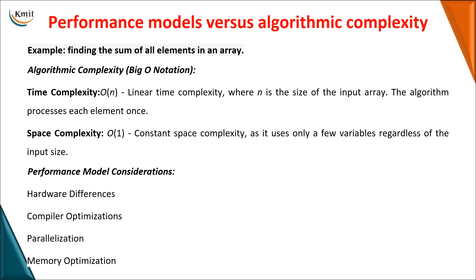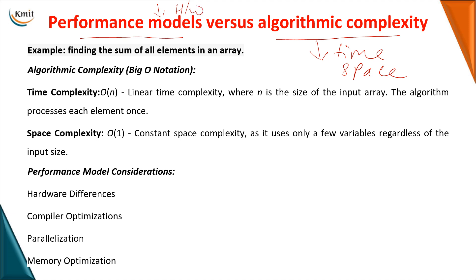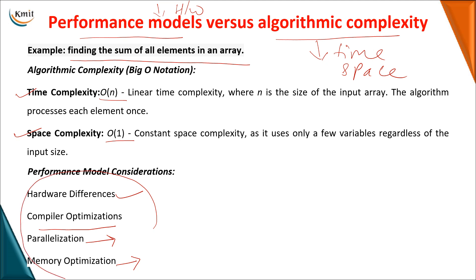Moving on to performance model versus algorithm complexity: as we've seen, complexity can be in terms of time or space. In the performance model we deal with the hardware structure. For example, if you want to add all elements in an array, algorithm complexity gives you O(n) or O(1), whereas the performance model considers hardware differences across machines, compiler optimizations, parallelization, and memory optimization. These factors together form performance model considerations.